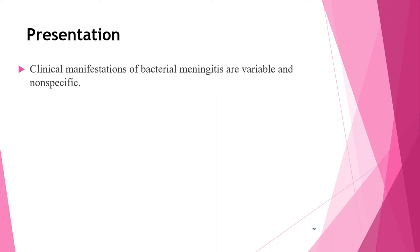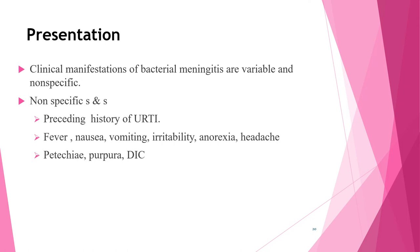The onset of acute meningitis has two predominant patterns. Most often, meningitis is preceded by several days of fever accompanied by upper respiratory tract or gastrointestinal symptoms, followed by non-specific signs of CNS infection such as increasing lethargy and irritability. The more dramatic presentation — with sudden and progressive shock, purpura, reduced level of consciousness progressing to coma within 24 hours — is less common.